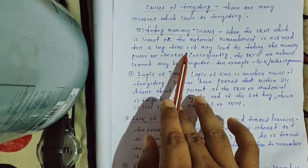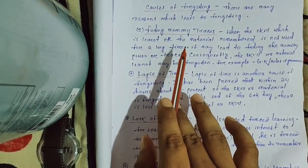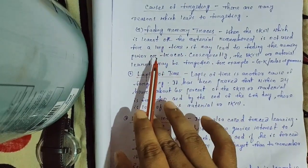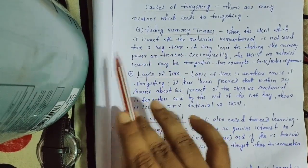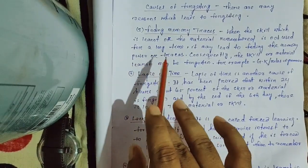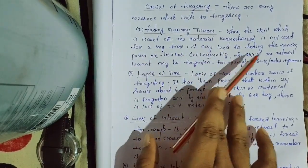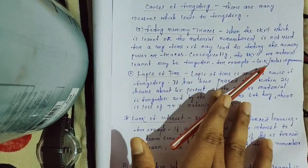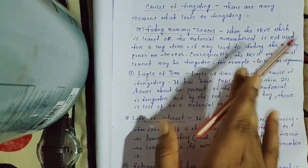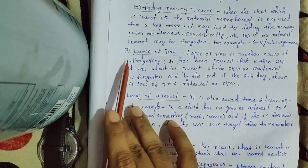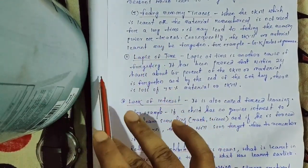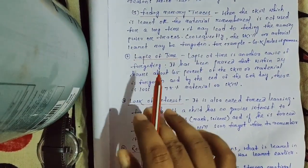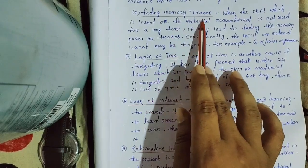If you have learned a skill or some material and you cannot retain it over the long term, then it fades from your mind. For example, rules of grammar — if you don't practice them regularly, you will naturally forget most of them. This is the sign of fading memory traces.